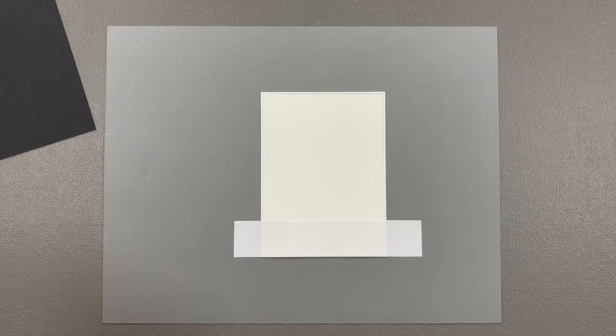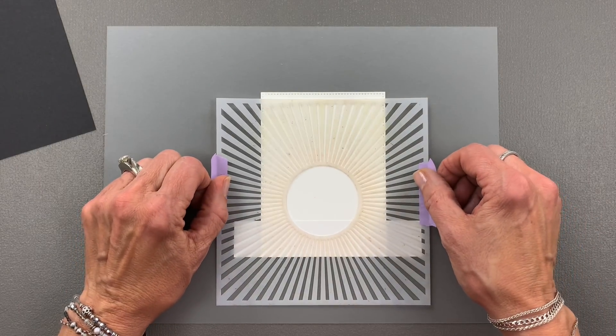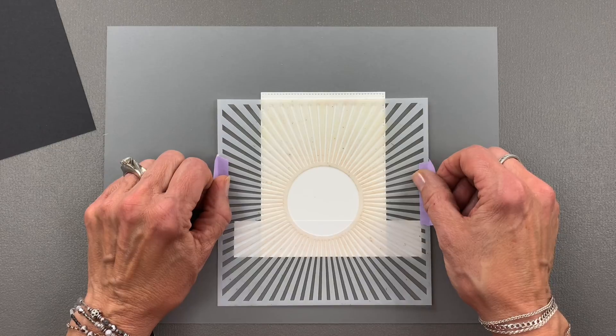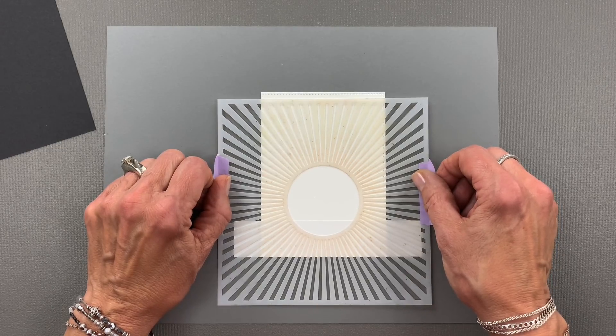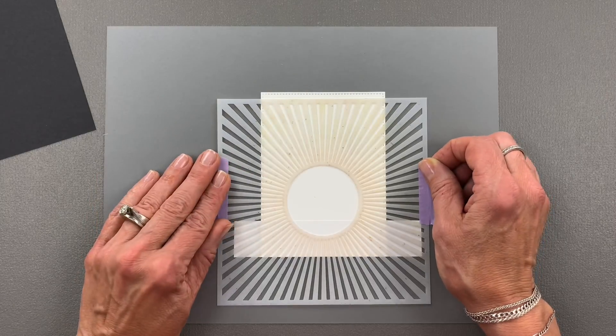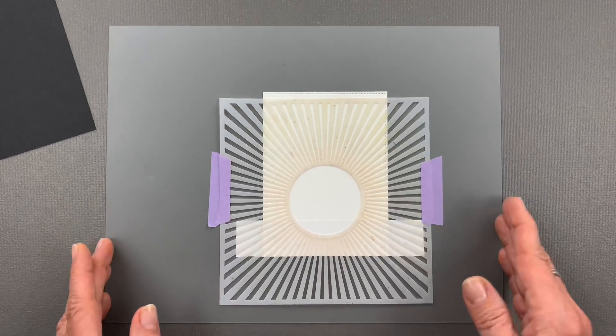Then I'm going to use the Sunshine Stencil and place that with most of the sunshine showing but a little bit going underneath that Masking Magic. I want to make sure that it's even on both sides and I'm using a little bit of washi tape to adhere that to this piece of scrap paper.